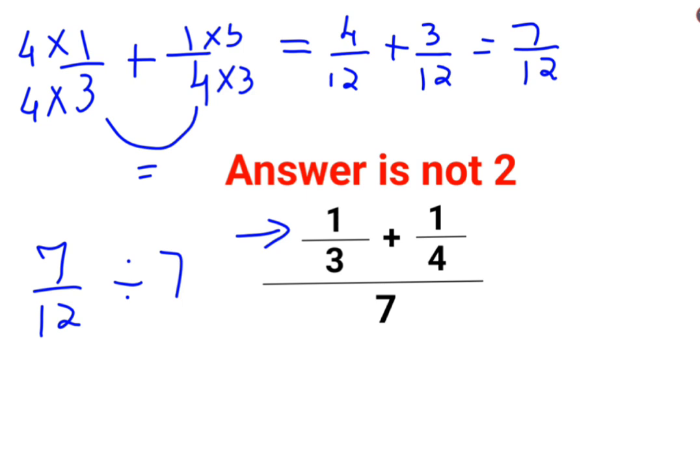Now whenever you have division, especially if it is involving fractions, you will follow the rule of KCF. K stands for keeping the first number as it is. C stands for changing the division sign to multiplication. F stands for flipping or taking reciprocal of 7 which is 1 upon 7.